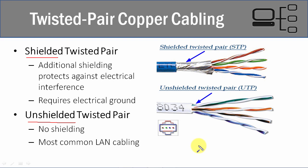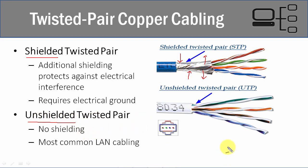The shielding protects against electrical interference — not only preventing signals from going out, but also blocking outside signals from coming in. It acts as a metal shield. Unshielded twisted pair has no shielding and is the most common type because it's cheaper and more affordable for wide use across multiple industries.